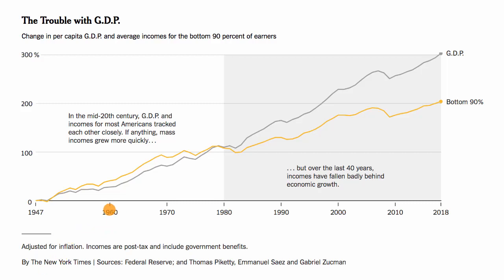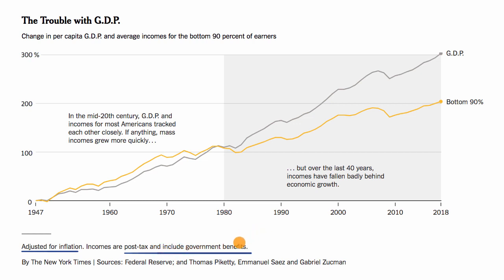This is a chart from the New York Times that shows how per capita GDP has trended on an inflation-adjusted basis since 1947 — essentially the post-World War II era, which ended in 1945. It's always good to read the fine print: the incomes given are post-tax and include government benefits, so if someone is receiving a government benefit of a certain value per year, that would be included in their income here.